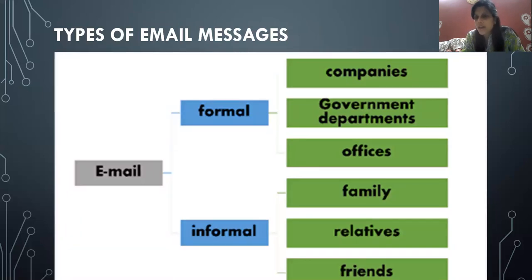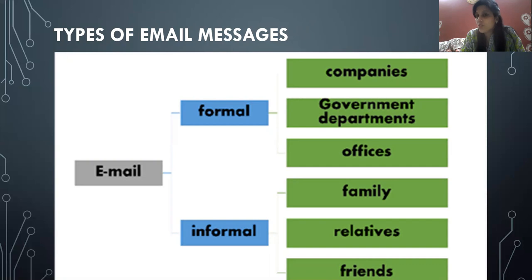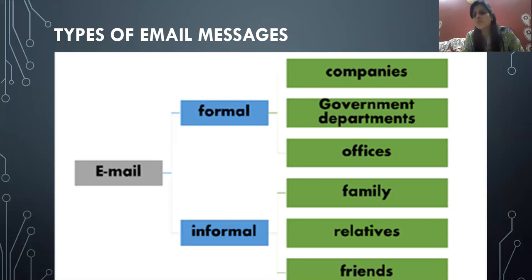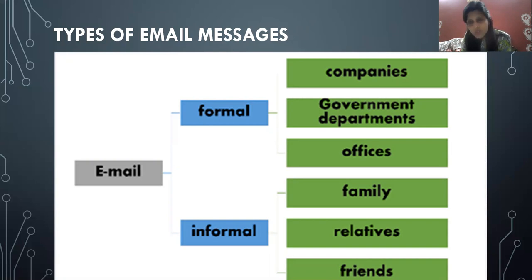Before learning how to write an email, let's look at the types of email messages. Just like letter writing, there are two types: formal email writing and informal email writing, as we did in class 6. Formal means writing to companies, government departments, and offices. Informal means writing to family, relatives, and friends.